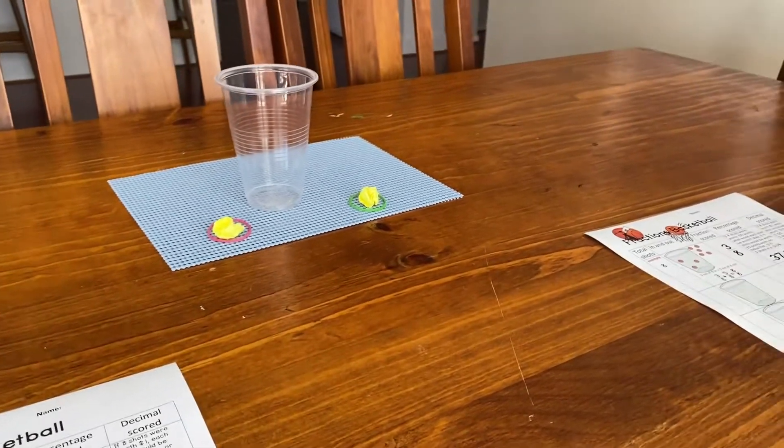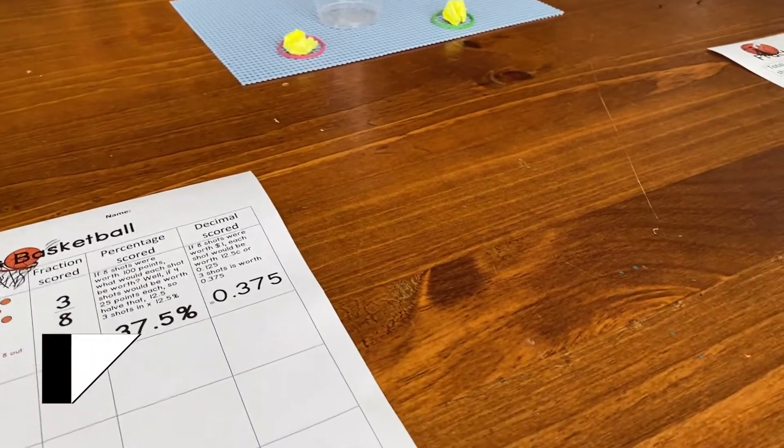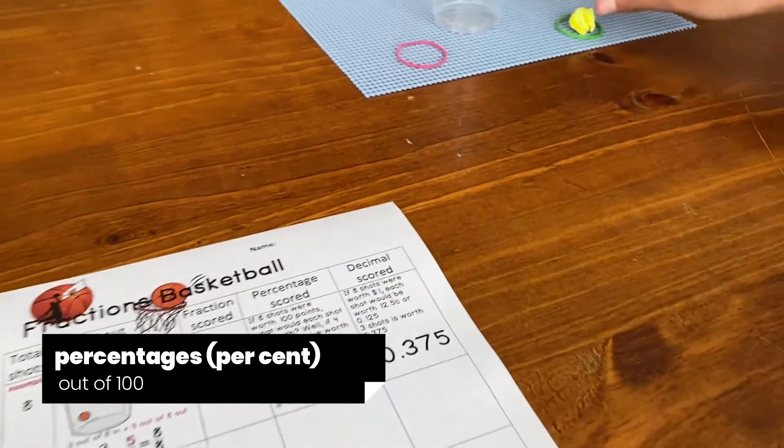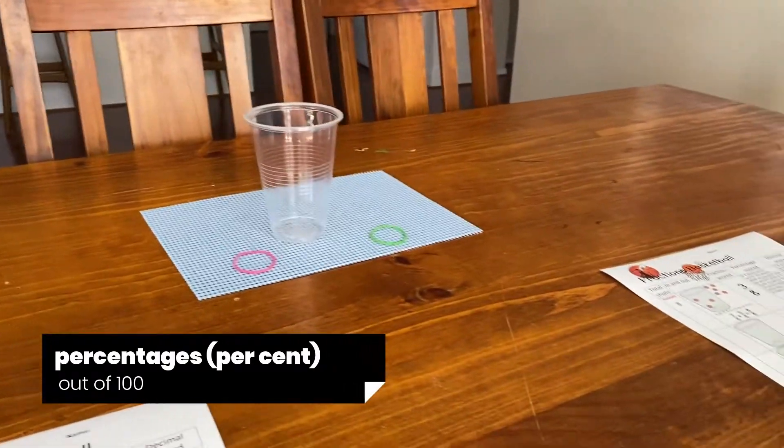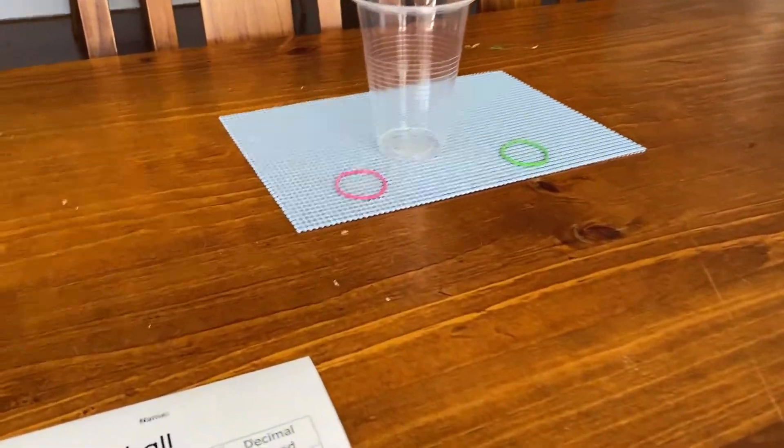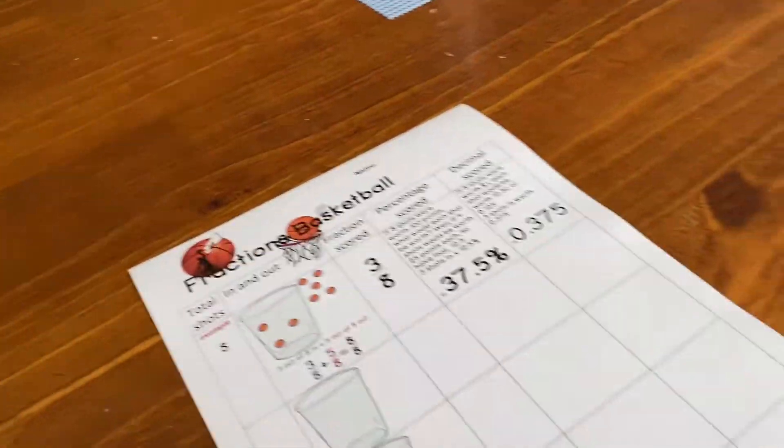Let's have some shots. You have one, I'll have one. Whenever we have an odd number you can have the extra shot because I think you're going to be better. You go first. Oh okay, the tables have turned. Let's record.